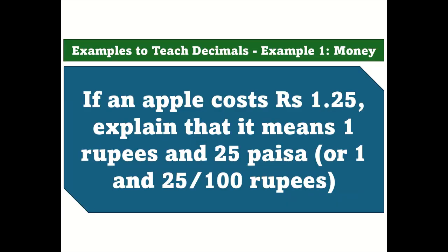Examples to teach decimals. Example 1 — Money. If an apple costs 1 rupee and 25 paise, explain that it means 1 rupee and 25 paise, or 1 and 25 one-hundredths rupees.